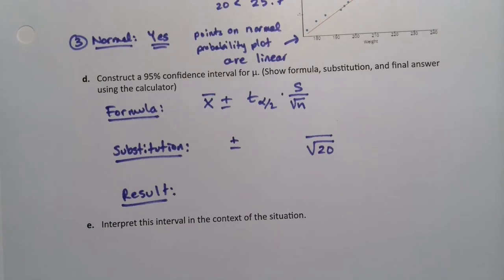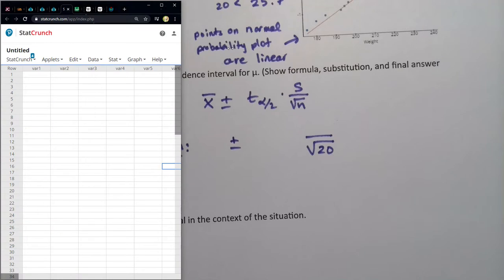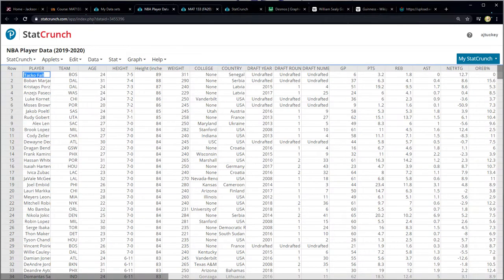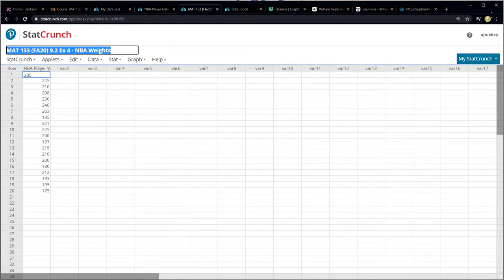Well, long time ago we actually learned how to find x bar and s from a data set. So those values we can still find if we have the data. I actually put these data into StatCrunch and I made it a publicly available data set. I called it MAT133 fall 20 9.2 example 4 NBA weights. So if you start searching for MAT133 NBA you'll probably find both the large data set and this particular one. I'll actually make it an active link for future.